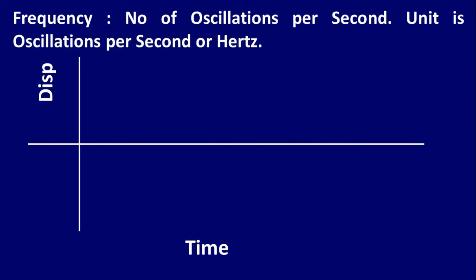Frequency is the number of oscillations per second. Unit is hertz or oscillations per second. This is the graph of a sound wave which is oscillating at the rate of two oscillations per second.